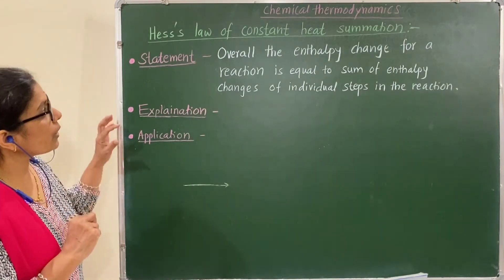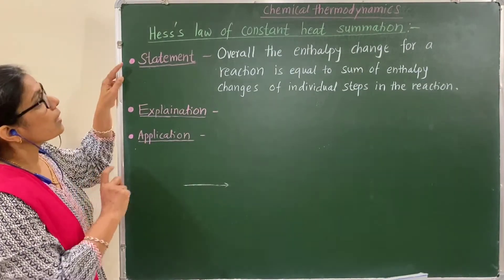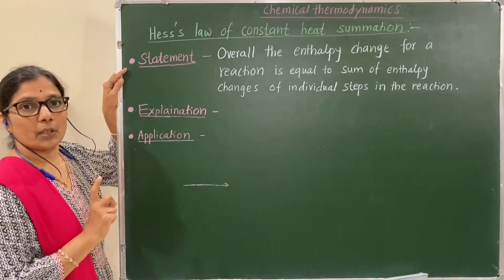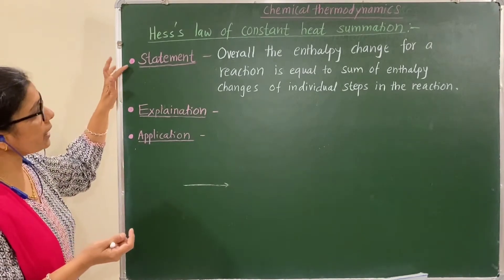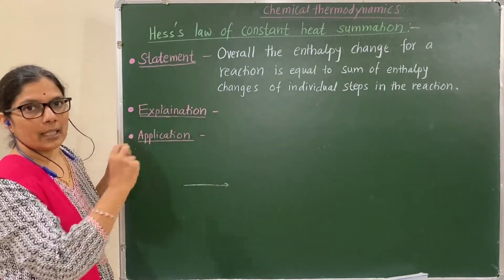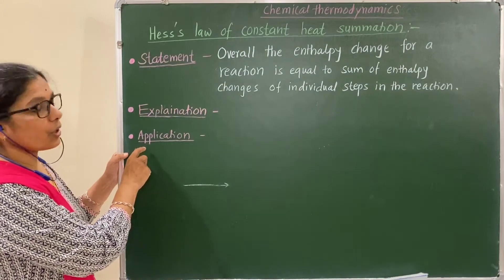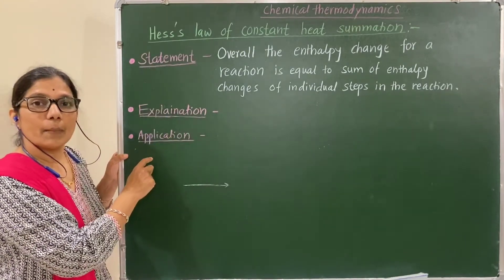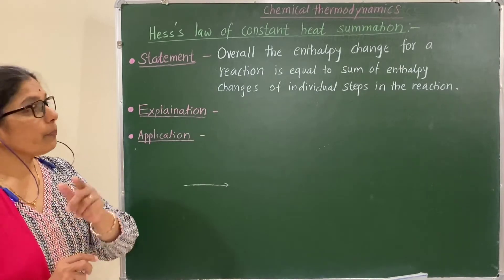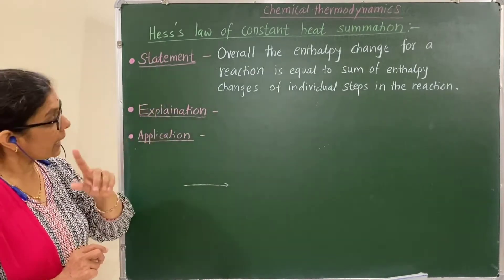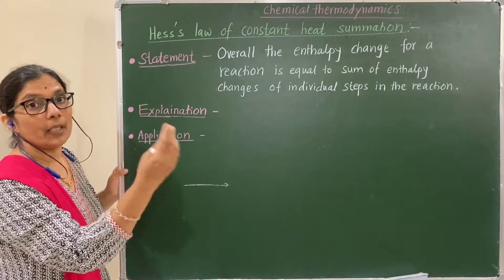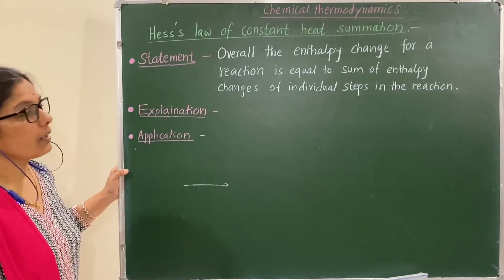The questions asked on this part: if the question says 'state Hess's Law' — one mark — then write the statement. If the question says 'state and explain Hess's Law,' then write the statement and explain one example. If the question says 'state and explain Hess's Law and give the application of Hess's Law,' include all three parts.